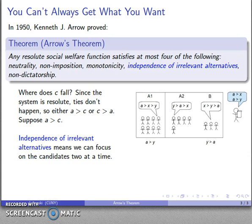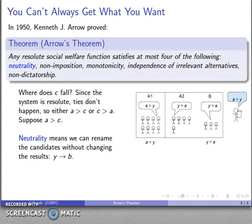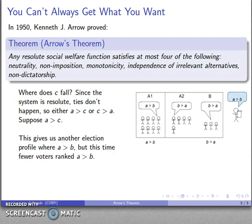Independence of irrelevant alternatives means I can focus on two candidates at a time, so I'll just focus on A and Y — the actual ranking of X doesn't make a difference. Here I have an election profile: all of these people have A outranking Y, all of these people have Y outranking A, and the election result is that A outranks Y. Once again neutrality means I can rename the candidates, so I'll rename Y as B. Now I have a new election profile where A outranks B, but whereas before I needed all of these people to rank A over B in order for A to win, I only need this smaller group of people to have A outranking B and A still wins.